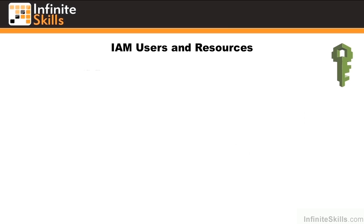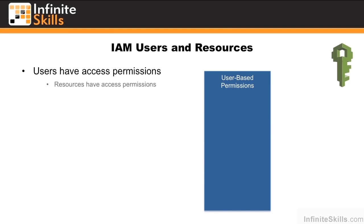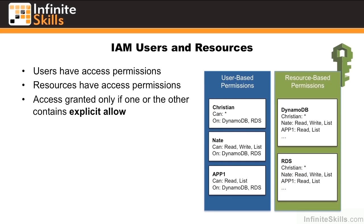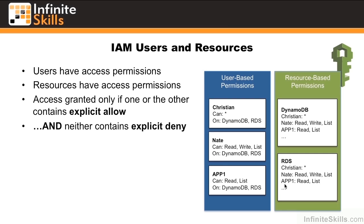A grantor cannot give any permissions that they themselves do not have. IAM also has users and resources. Users have access permissions, and resources have access permissions. The access to a resource is only allowed if either one or the other contains an explicit allow. For example, we've given Christian the ability to do anything in DynamoDB and RDS — both on the user side and the resource side. This is a bit redundant, because really the only important thing is that one contains an allow and neither contains an explicit deny.